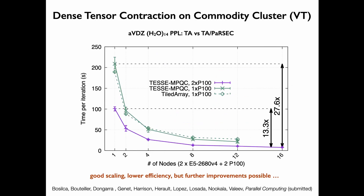We then switched attention to tensor contractions in CCSD. The first is the particle-particle ladder — the ABCD term — which is conventional and actually performs quite well, especially using the PaRSEC backend. That's what we call TESSE-MPQC. In this case you can get almost a 28× speedup going from one GPU on one node to two GPUs on each of 16 nodes — quite favorable scaling — though the percentage of peak is significantly lower at around 20-something percent, so further improvements are still necessary.